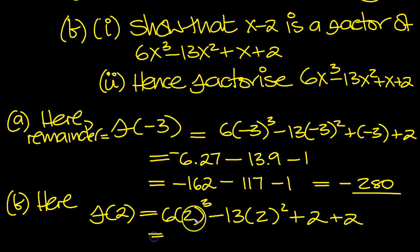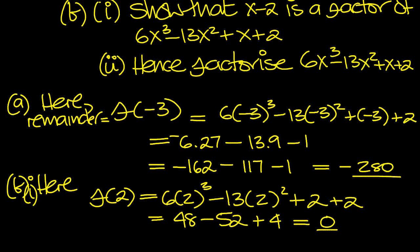So we get 6, 2 cubed is 8, 6 eights are 48. 2 squared is 4, 4 thirteens are 52. 2 plus 2 is 4. 48 plus 4 is 52, take 52 is 0. So that's B part 1, now part 2, hence factorize. So we know that's a factor then. Part 2.